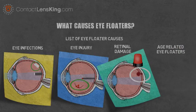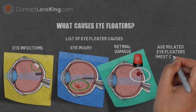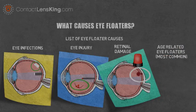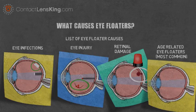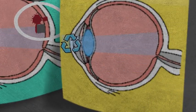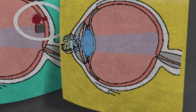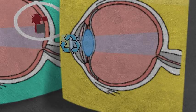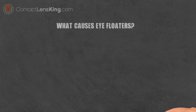Age-related eye floaters. Age is probably the most common factor in developing eye floaters. This is a result of the normal cell recycling of the cornea, causing cell debris to sometimes float within the eye before draining. This floating of cells can obstruct light that enters the eye, ultimately resulting in gray or black dots being seen.